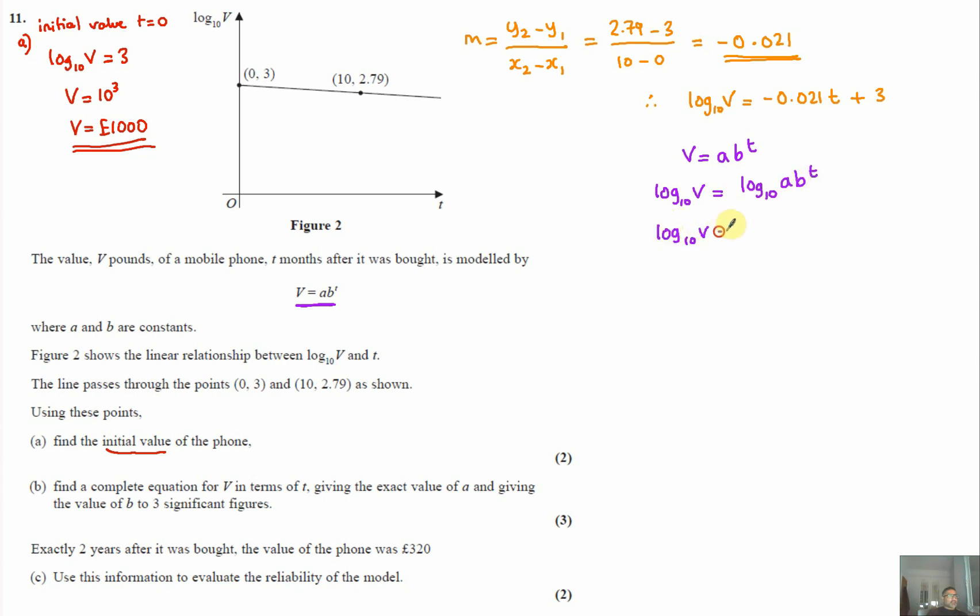So using our laws of logs, let's separate those two out. Log to base 10 a plus, because they're being multiplied, I can rewrite that as log to base 10 b to the t. And I'm just going to rearrange this and also use the power law of logs there to move that to the front. So we get log to base 10 V equals, I'm going to move that to this side, so log to base 10 t, log to base 10 b, plus log to base 10 a.